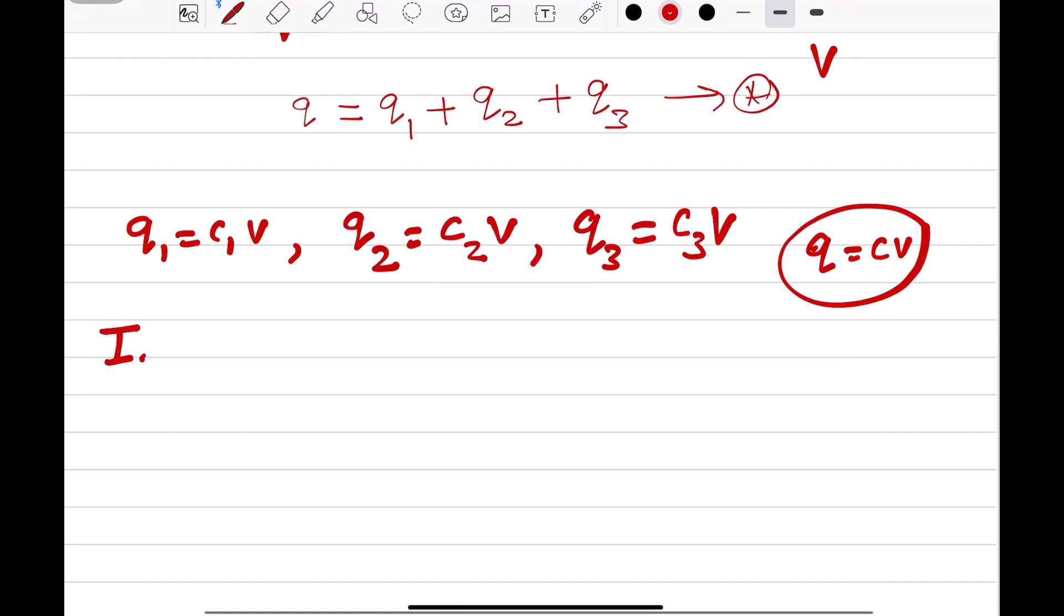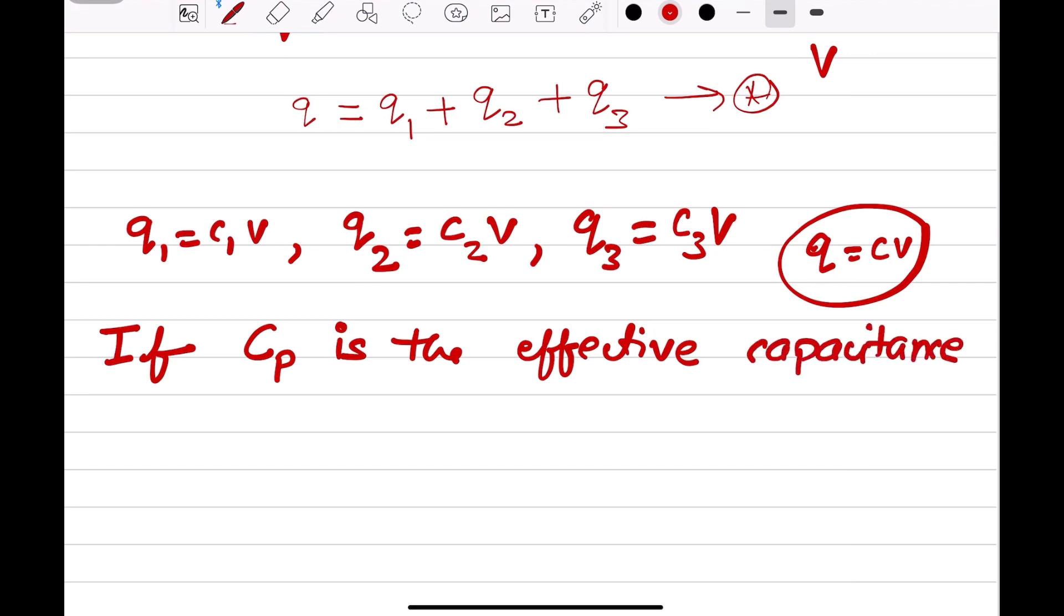Now, this is a very important step. If Cp is the effective capacitance of the combination, then what happens? Then I can write total charge Q is equal to Cp into V.